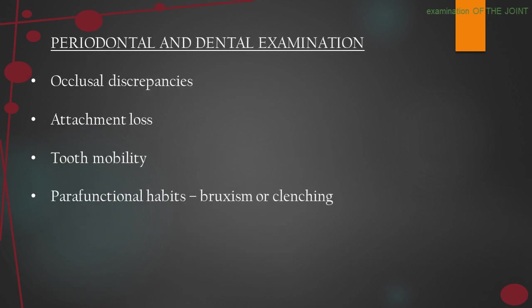Finally, the periodontal and dental examination of the patient is done. We look for occlusal discrepancies which may lead to TMJ abnormalities, attachment loss, tooth mobility, and parafunctional habits like bruxism and clenching.